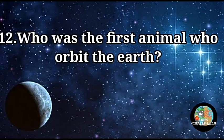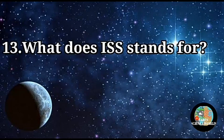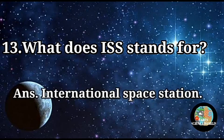12th Question: Who was the first animal to orbit the Earth? Answer: Laika the dog. 13th Question: What does ISS stand for? Answer: International Space Station.